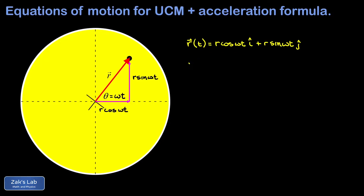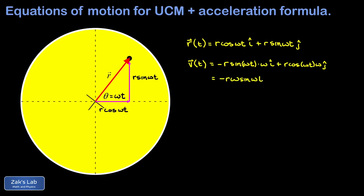The next thing we're after is the velocity vector. To get a velocity vector from a position vector, all we have to do is differentiate each of the components with respect to time. Differentiating r cosine(ωt) with respect to time requires the chain rule. I differentiate the cosine function with respect to its argument, giving me negative r sine(ωt), then the chain rule says I tack on the derivative of ωt with respect to time, which is a factor of ω. It's similar for the y component. Cleaning it up by moving constants in front, the velocity vector is −rω sine(ωt) î plus rω cosine(ωt) ĵ.